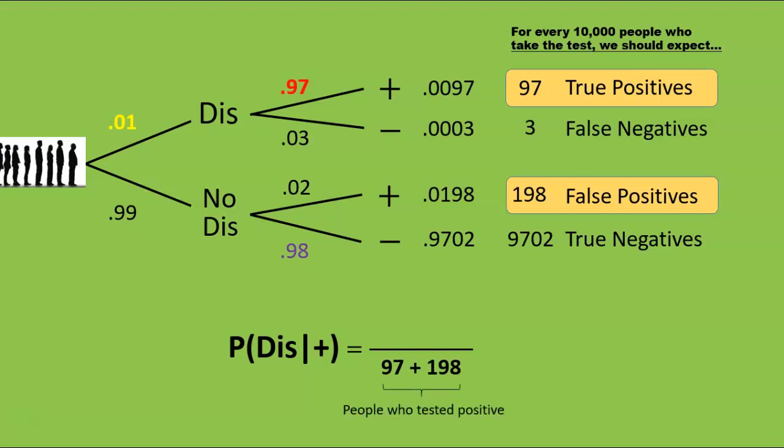Thus, when we compute our probability, the denominator will consist only of these people, since these are the people who tested positive. Of those people, how many actually have the disease? Only the true positives, of whom there are 97. So, 97 goes upstairs, since those are the people who tested positive and actually have the disease. When you run this through your calculator, you'll find that it comes out to about 0.33.